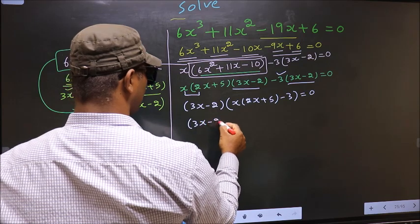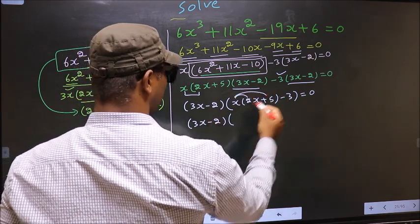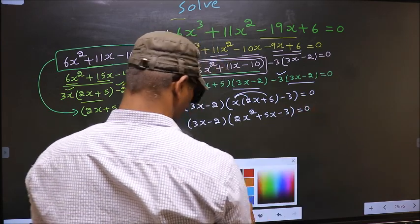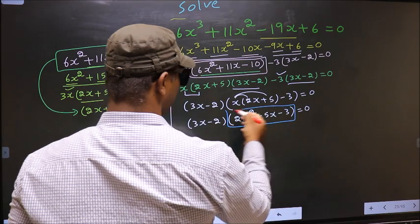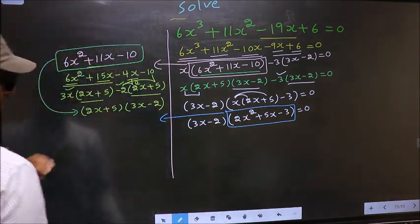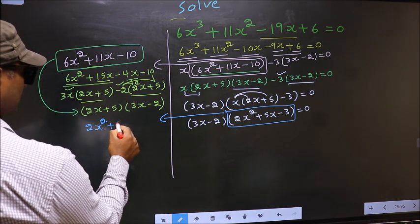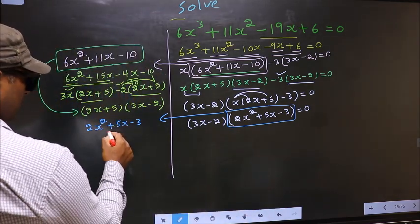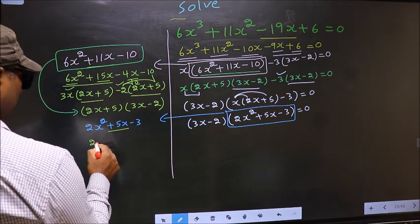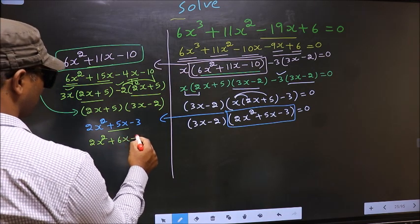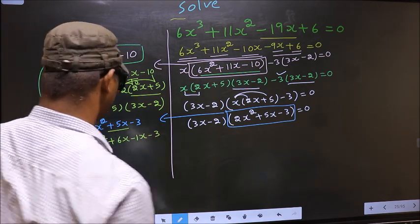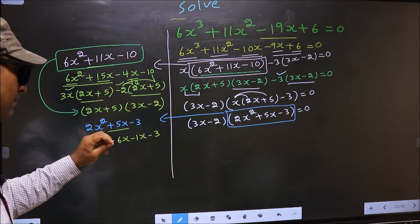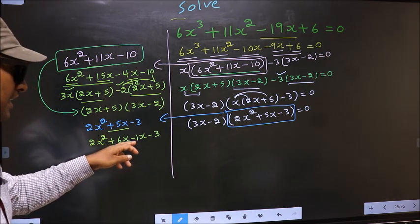Now 3x minus 2 — opening up the brackets gives 2x square plus 5x minus 3. Now we got a quadratic again. I will factorize 2x square plus 5x minus 3. To factorize this, we should split the middle term plus 5x. So in place of plus 5x, I write plus 6x minus 1x minus 3. Directly I have split plus 5x into plus 6x minus 1x.